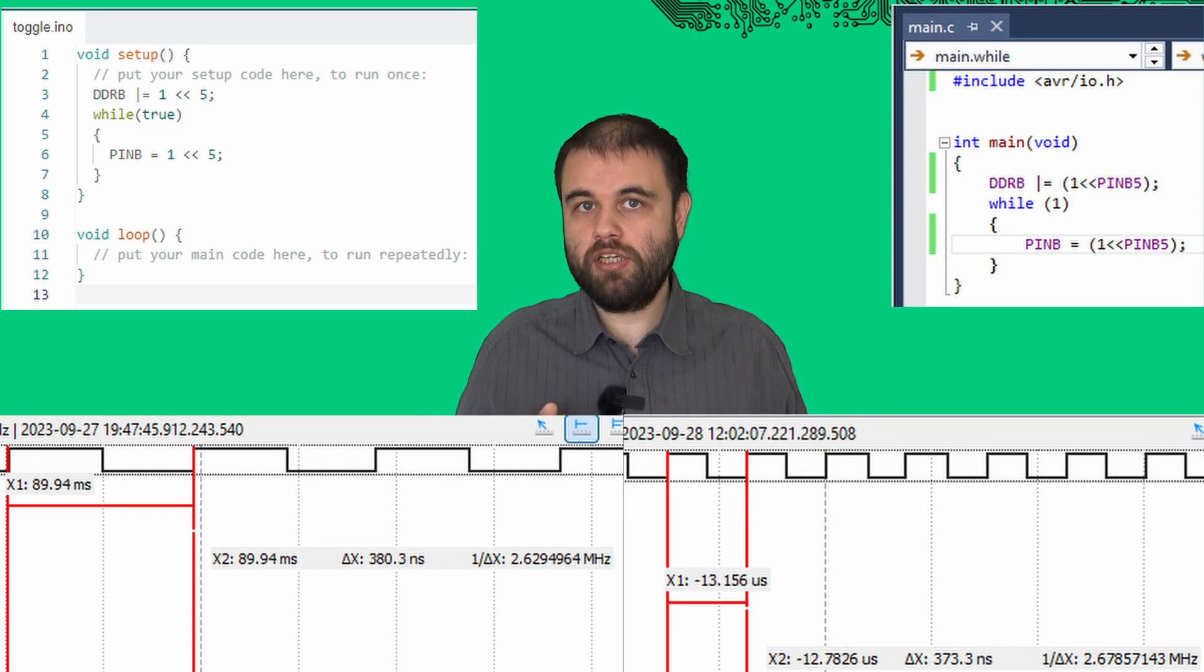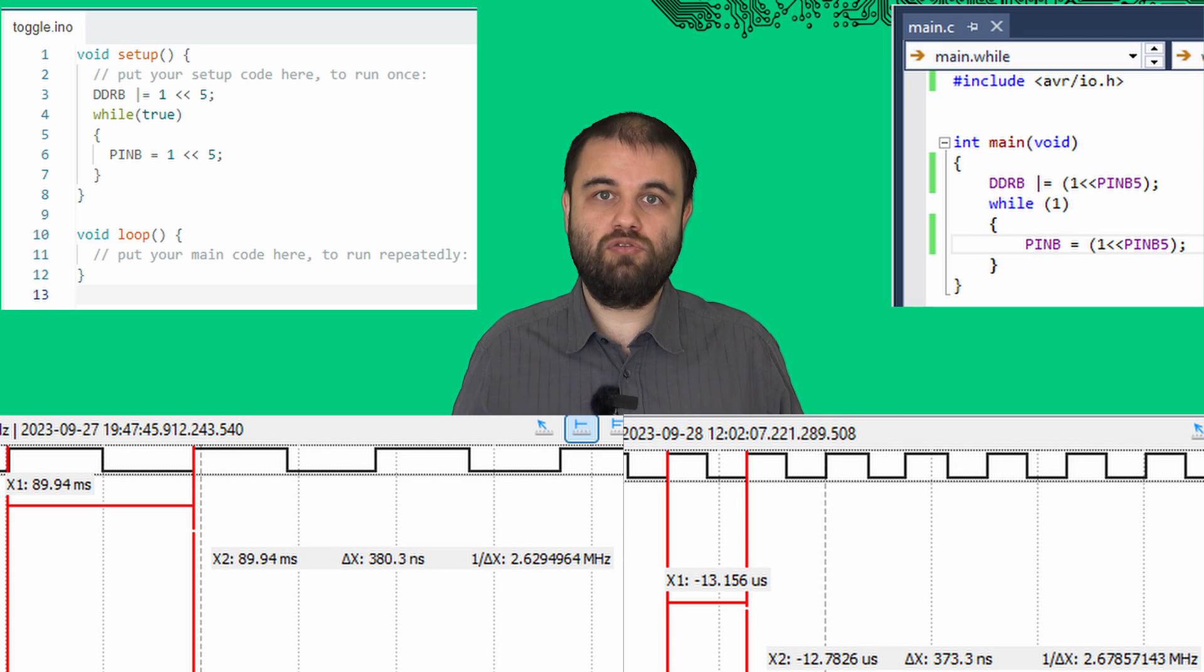Having that code in the binaries doesn't always slow it down, both bloated and stripped versions run exactly as fast. But having Arduino doing some background tasks makes some measurable difference. 2.63 megahertz instead of 2.68 megahertz. Just 1.9% slower, but slower.